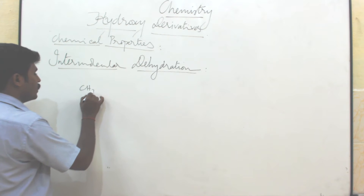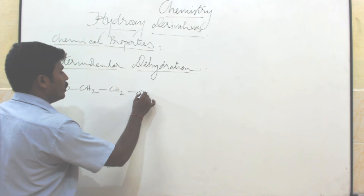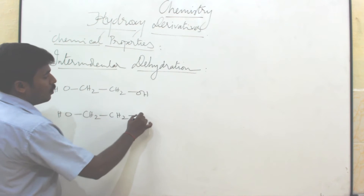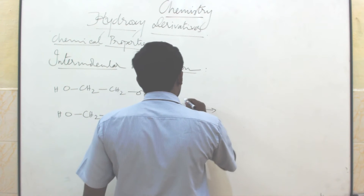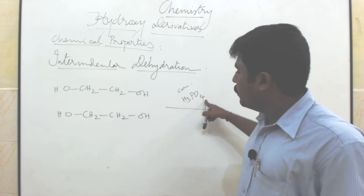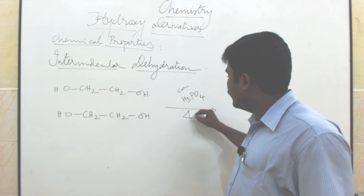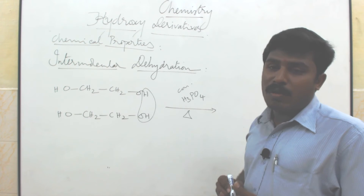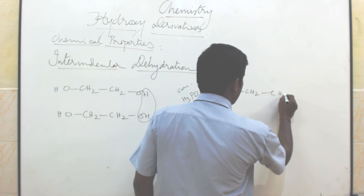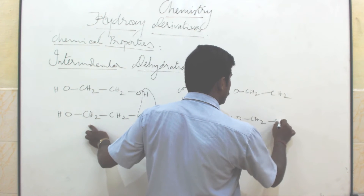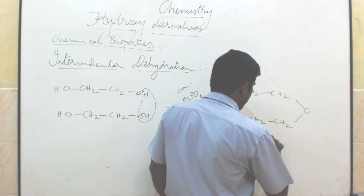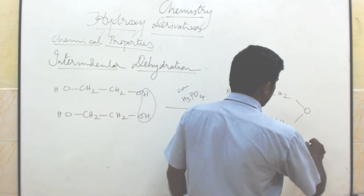Taking two molecules of ethylene glycol — each written as CH2OH-CH2OH — and adding concentrated phosphoric acid (H3PO4) with heat, one water molecule is removed. Only the O remains in between, giving CH2-O-CH2-CH2OH on each side. This product is named diethylene glycol.